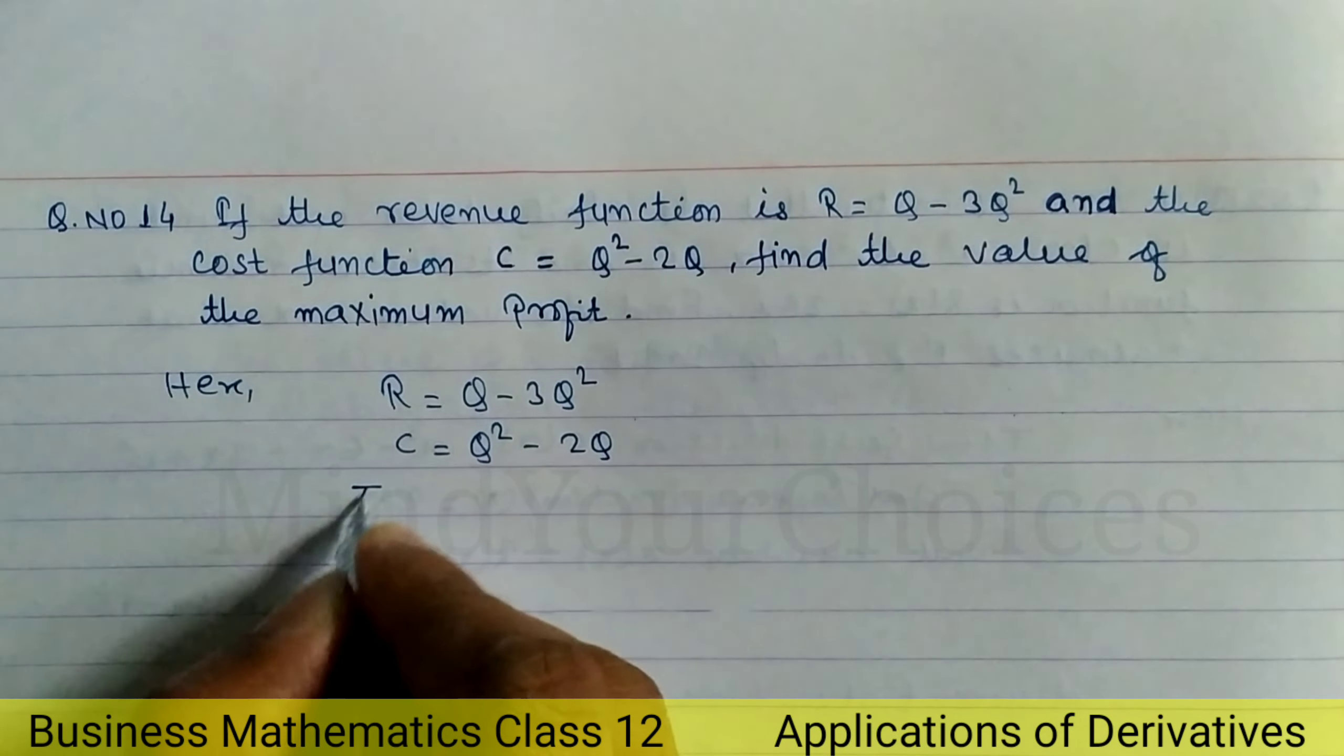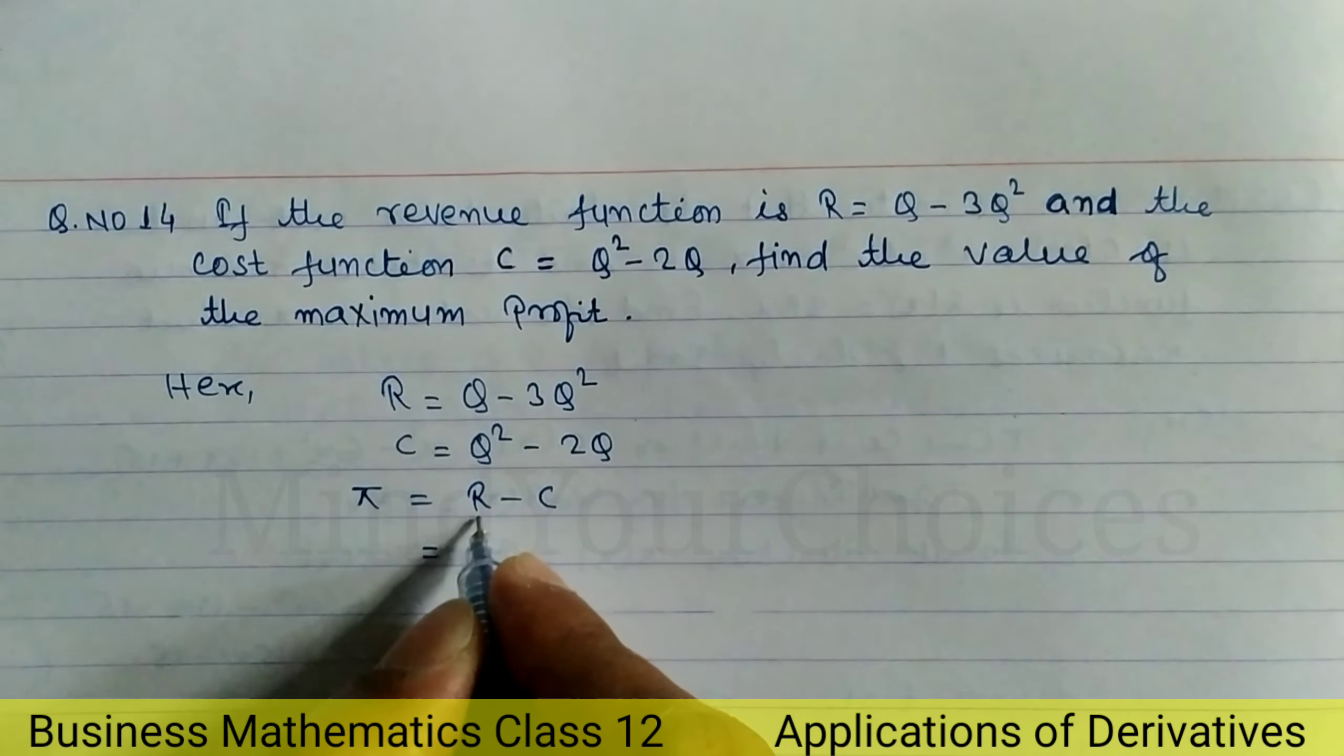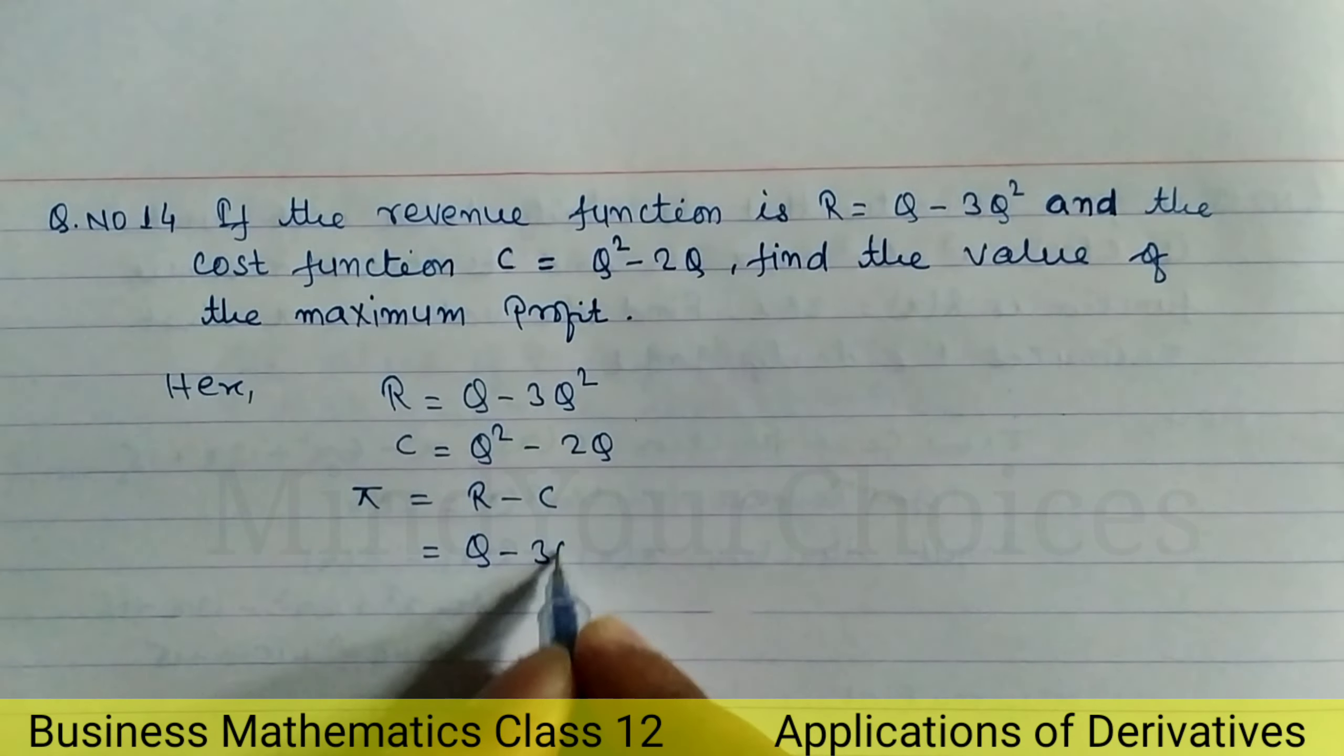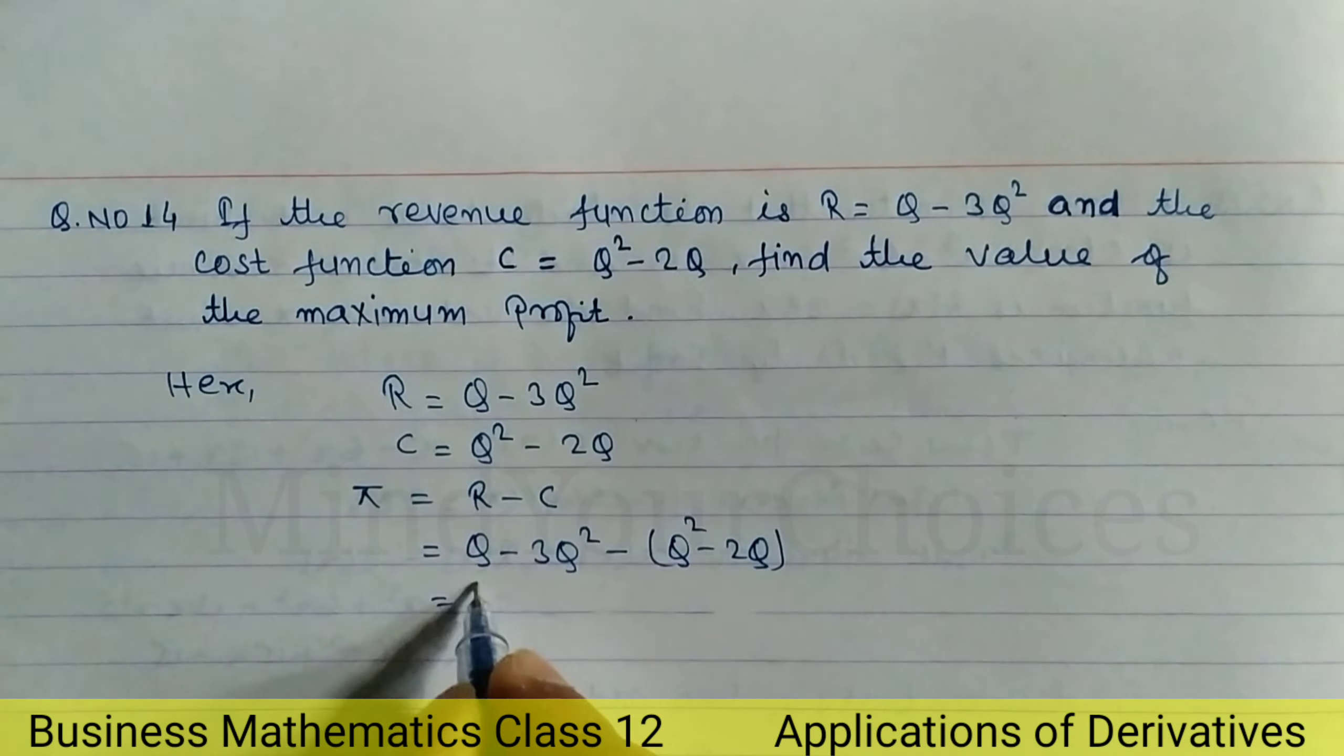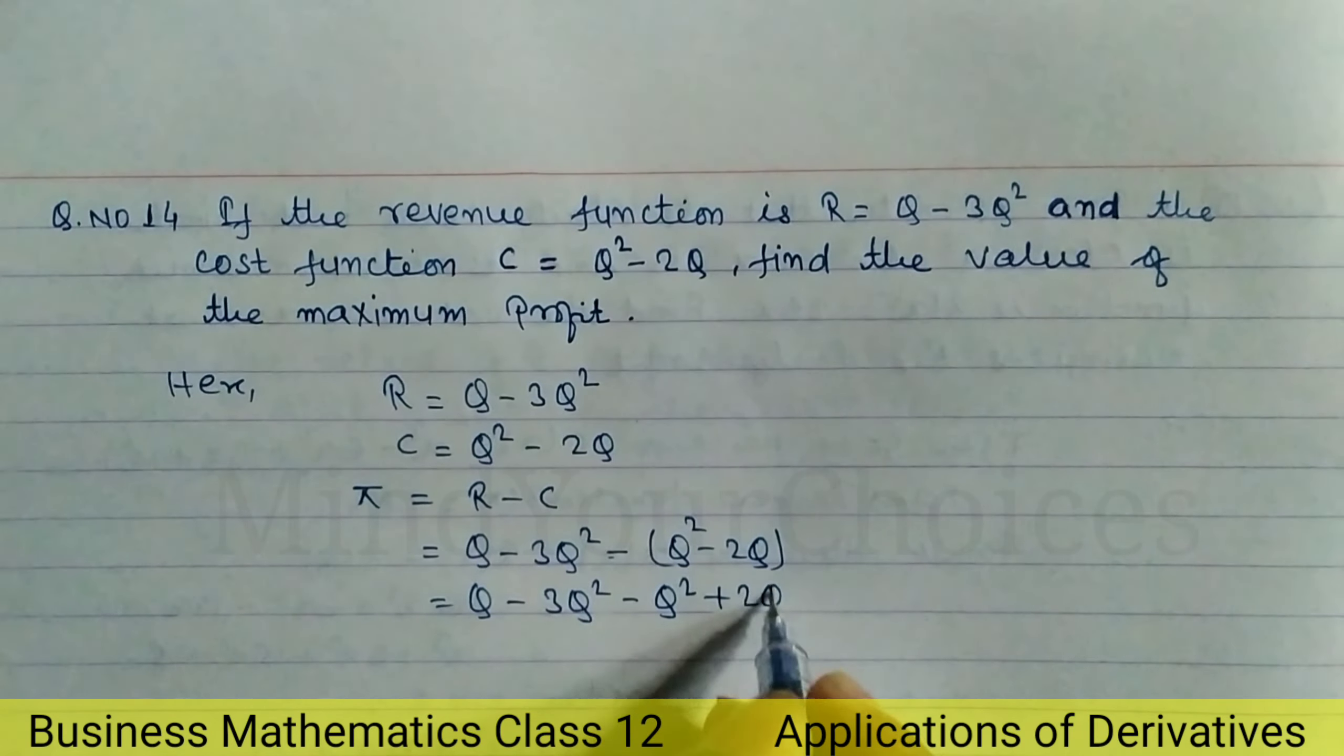The profit formula is R minus C, revenue minus cost. Total revenue minus total cost, you have to subtract. Profit equals revenue Q minus 3Q square minus cost Q square minus 2Q. Let's open the bracket: Q minus 3Q square minus Q square plus 2Q.